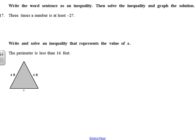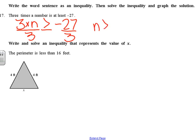Number seventeen: translate the word statement into an inequality. We have 3 times a number is at least — and 'at least' means it can be larger than negative 27, it can't be smaller, and it can be exactly negative 27 — so greater than or equal to negative 27. Solve by dividing by 3: n is greater than or equal to negative 9. Closed circle, ray goes to the right.